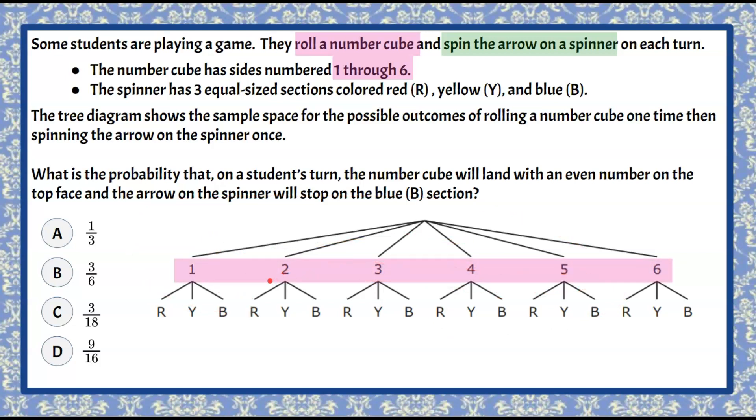So that's the first outcome is what's going to happen when we roll the number cube and we have six possible outcomes. We call this compound probability because we're going to have a second element to our game. We're going to spin the arrow on the spinner.